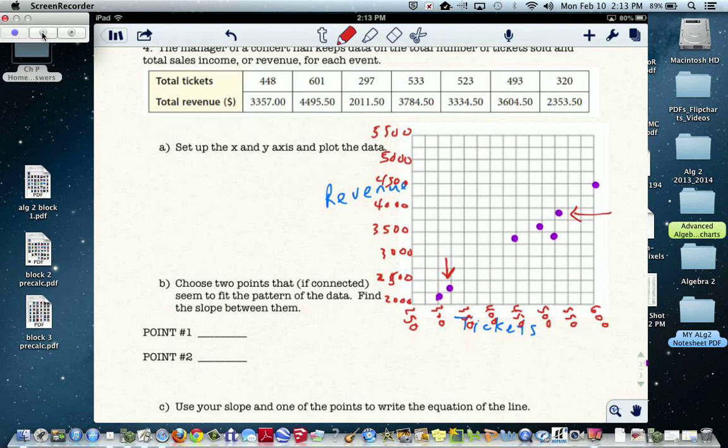and let's use this one. So that's (320, 2353.50). And this one must be my (533, 3784.50).